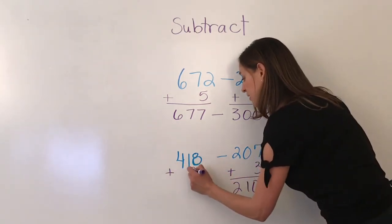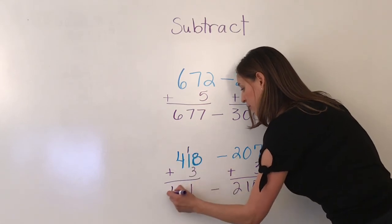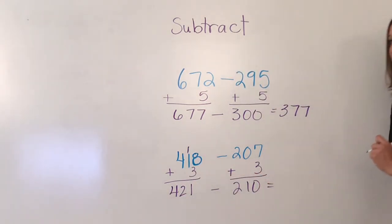So my number is 310 minus, I'm going to add 3 to this side, 421. My answer is 200.